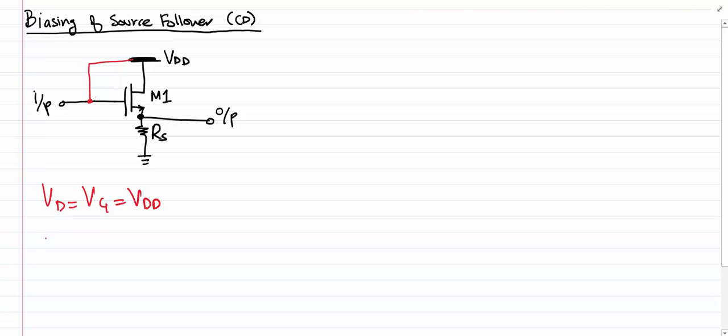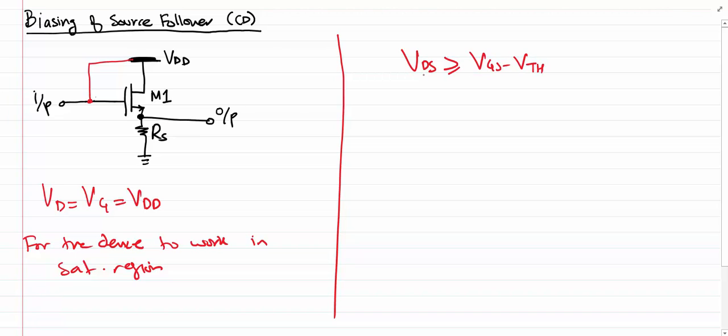Now let's see if the device is working in the saturation region. For the device to work in saturation region, we know that VDS has to be greater than or equal to VGS minus VTH. If I rearrange these terms, I'll get VDG has to be greater than or equal to minus VTH. Now here VD and VG are equal to VDD, therefore VDG is going to be equal to zero.